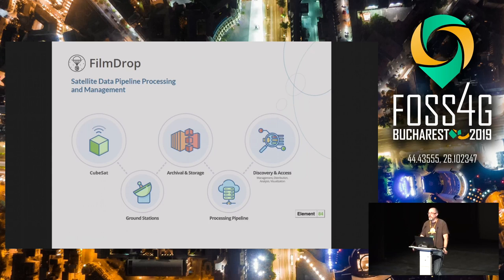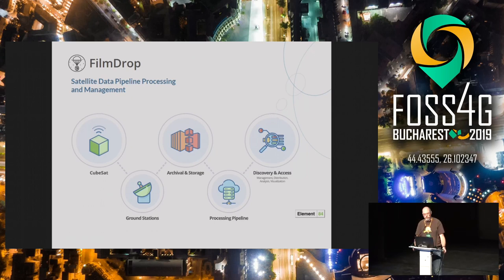We use something we call FilmDrop — named after the early days when satellites would literally take film and drop it to Earth to be processed. The flow starts with the CubeSat, data goes down to a ground station — this could be AWS Ground Station or another provider — then FilmDrop picks it up, archives it, runs it through a processing pipeline, and makes it available for discovery and access by the end user.